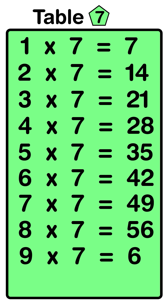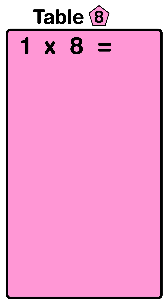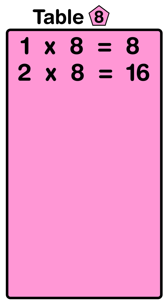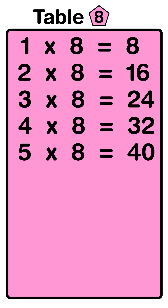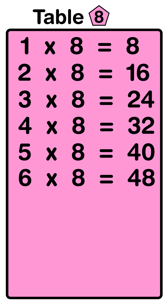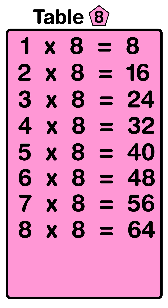Nine seven's are sixty-three, ten seven's are seventy. One eight's are eight, two eight's are sixteen, three eight's are twenty-four, four eight's are thirty-two, five eight's are forty, six eight's are forty-eight, seven eight's are fifty-six, eight eight's are sixty-four, nine eight's are seventy-two.